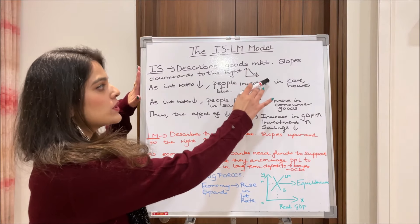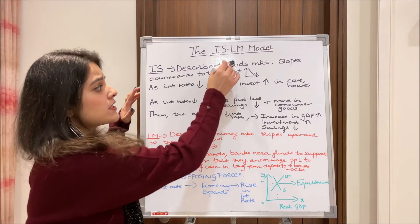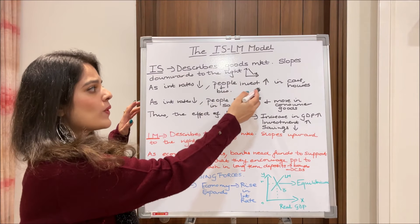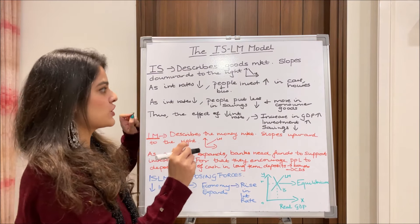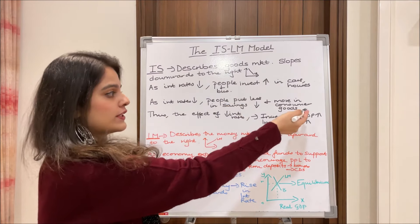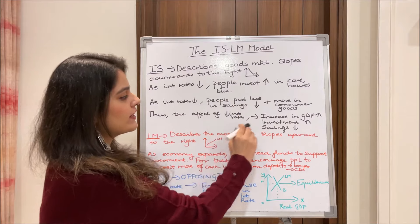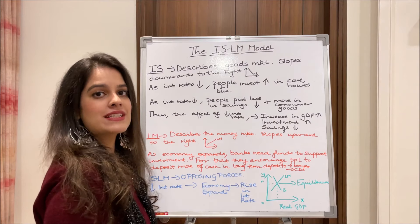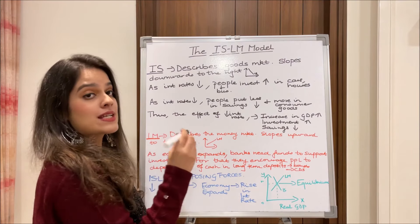The IS curve describes the goods market and slopes downward to the right, similar to the shape of a demand curve. This downward slope depicts that as interest rates fall, people and businesses invest more — for example, in cars and houses — since interest rates and investment are inversely proportional. Also, as interest rates fall, people put less into savings and more into consumer goods. The overall effect of a falling interest rate is an increase in GDP, leading to an increase in investment and a fall in savings.